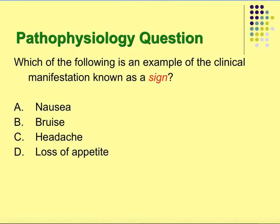Quick question: which of the following is an example of the clinical manifestation known as a sign? Nausea, bruise, headache, or loss of appetite — which would be the best example of a sign? Remember, a sign is objective, not subjective. So the best answer would be a bruise.